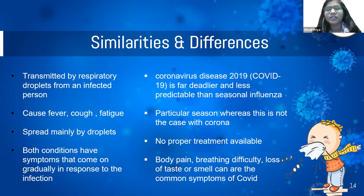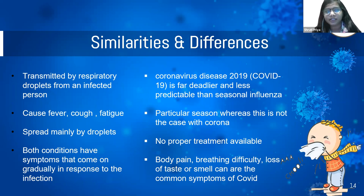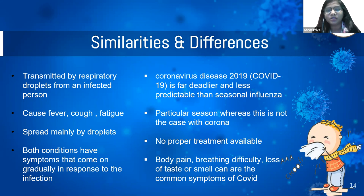Regarding season, influenza or common flu has a particular season — people get infected during September and October, which is why it is also called a seasonal disease. Coronavirus, however, has no particular season. Influenza also has a proper treatment available, which is not the case with COVID. Another key difference is that coronavirus patients experience difficulty breathing and also lose their ability to taste and smell, which is very common in COVID-19 but is not present with common influenza.